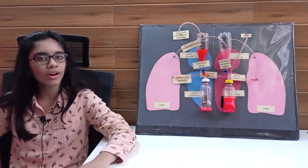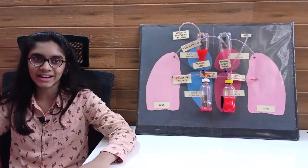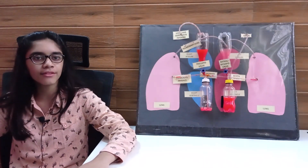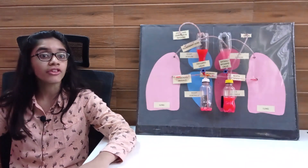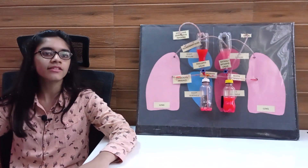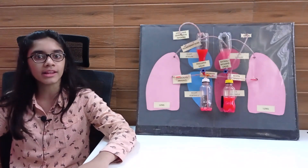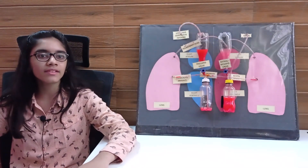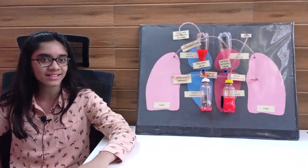An average adult body has around 5 liters of blood. This blood circulates through the body and reaches back to the heart in less than a minute, which means thousands of trips each day. This blood sends oxygen and nutrients to all parts of our body and carries away unwanted carbon dioxide and waste products.